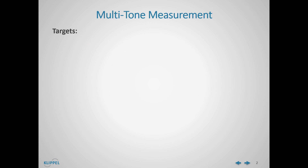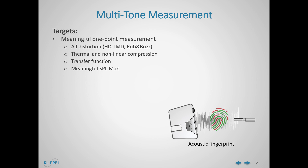First, I would like to introduce the targets that we can reach using a multi-tone measurement. It is a meaningful one-point measurement, so with a single measurement we get all the distortion — the harmonic, intermodulation, and the ribbon bath together. The combination of all the distortions gives us a characteristic distortion curve which can be considered an acoustic fingerprint of our DUT. In addition, we can measure the thermal and non-linear compression and the transfer function, and we can use the multi-tone measurement to obtain a meaningful SPL max value.